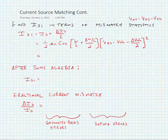So if we do that we can come up with finding the currents in terms of the mismatch statistics. Here I have ID1 is equal to ID the average current plus the error current divided by 2. And if I write this out I get the following expression. Now if I go ahead and grind through the algebra here we get the following.